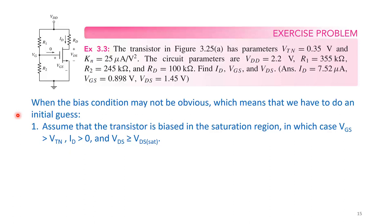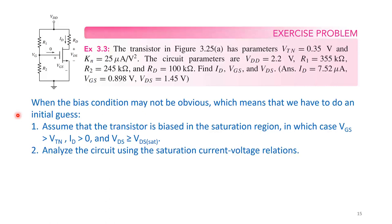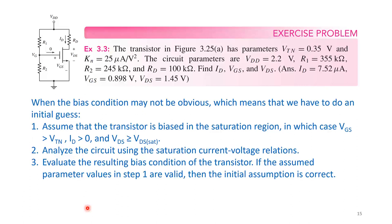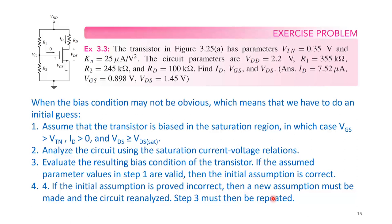When the bias condition is not obvious and we must make an initial guess, we assume the transistor is biased in the saturation region — meaning VGS > VTN and VDS > VDS_sat. We then analyze the circuit using saturation current-voltage relations. After that, we evaluate the resulting bias condition. If the assumed parameter values are valid, the initial assumption is correct. If not, a new assumption must be made, the circuit re-analyzed, and the check repeated.